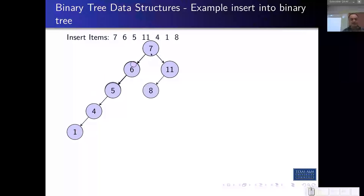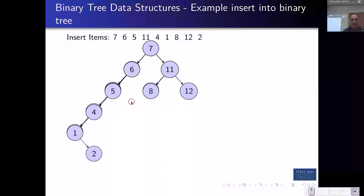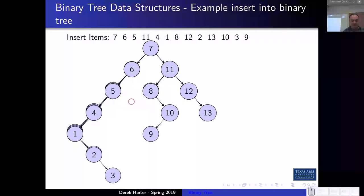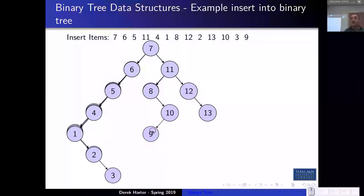So that's the general insertion procedure for nodes in a tree. For 1, it's less than all these so it ends up on the extreme left. The 8 was bigger than 7 but less than 11, so it goes down there. And 12, 2, and so on, finishing the tree. Given the sequence of insertions, you end up with your binary tree that looks like this.